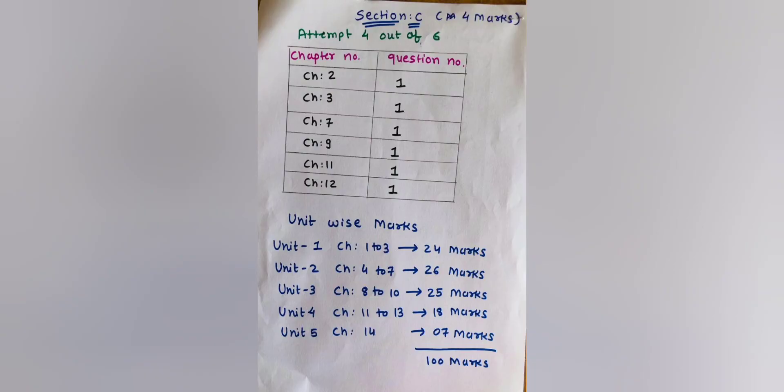Section C covers 4 marks questions. You have to attempt any 4 out of 6. One question will be asked from Chapters 2, 3, 7, 9, 11 and 12.